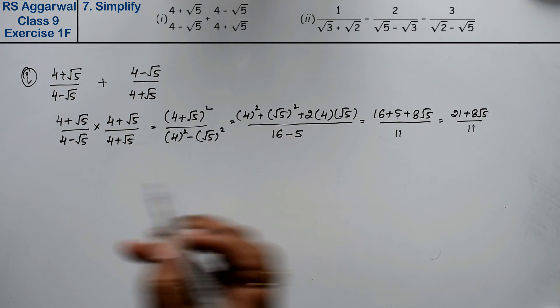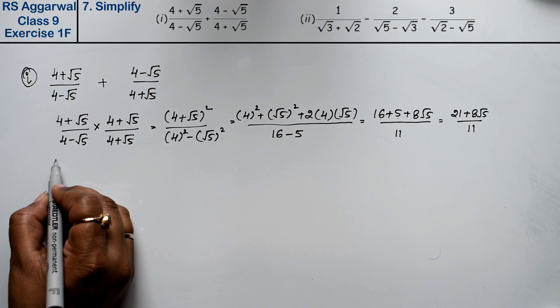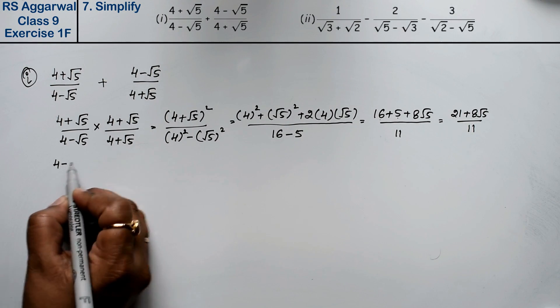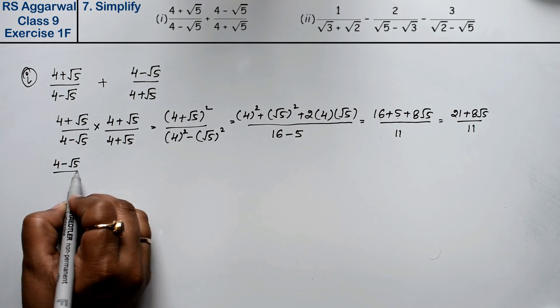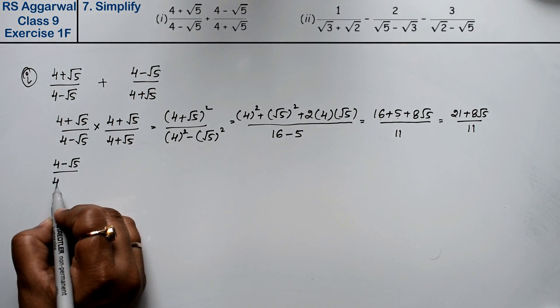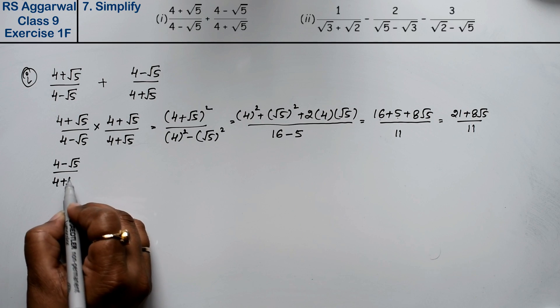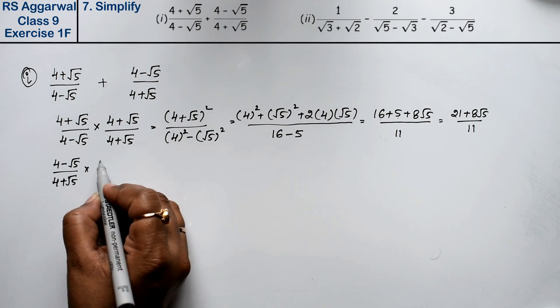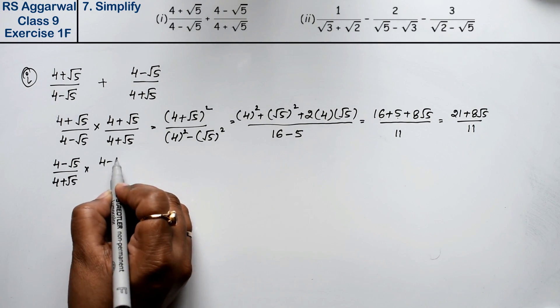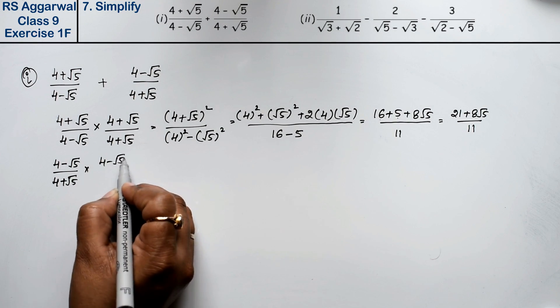Now I will rationalize the second fraction: (4 - √5)/(4 + √5). Multiplying numerator and denominator by (4 - √5).